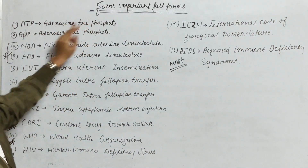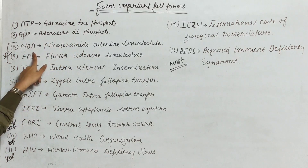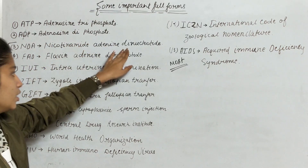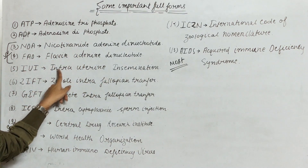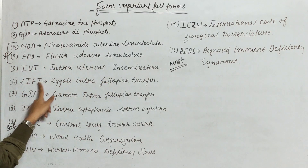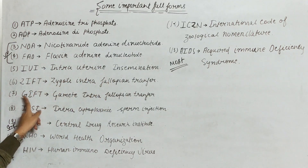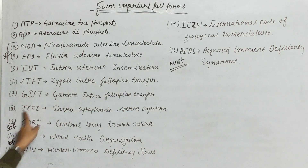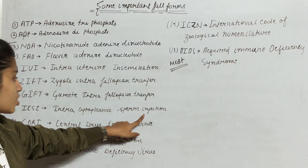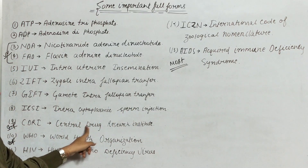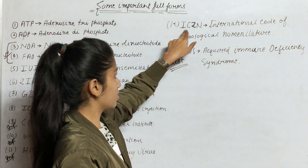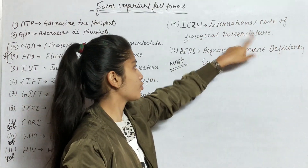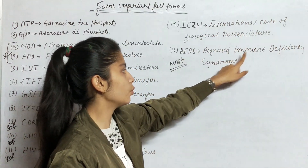Quick recap of all full forms: ATP — Adenosine Triphosphate; ADP — Adenosine Diphosphate; NAD — Nicotinamide Adenine Dinucleotide; FAD — Flavin Adenine Dinucleotide; IUI — Intrauterine Insemination; ZIFT — Zygote Intrafallopian Transfer; GIFT — Gamete Intrafallopian Transfer; ICSI — Intracytoplasmic Sperm Injection; CDRI — Central Drug Research Institute; WHO — World Health Organization; HIV — Human Immunodeficiency Virus; ICZN — International Code of Zoological Nomenclature; AIDS — Acquired Immune Deficiency Syndrome.